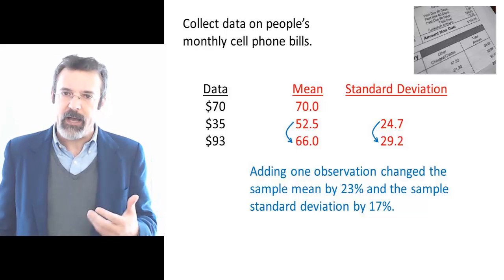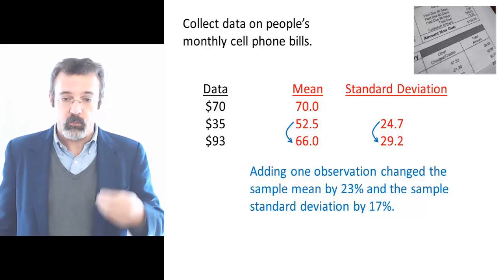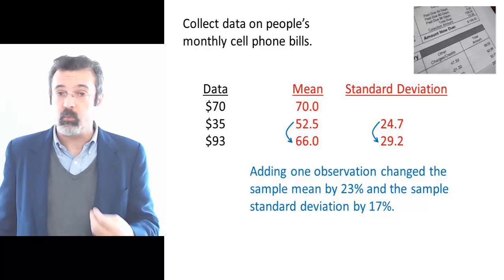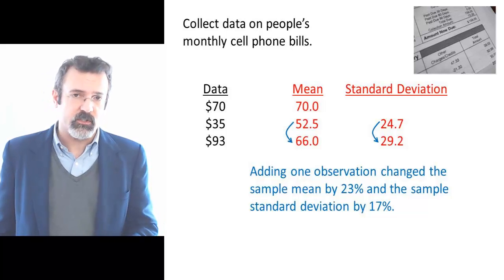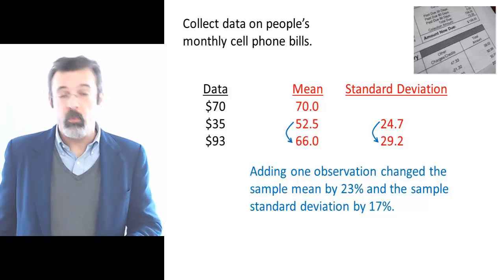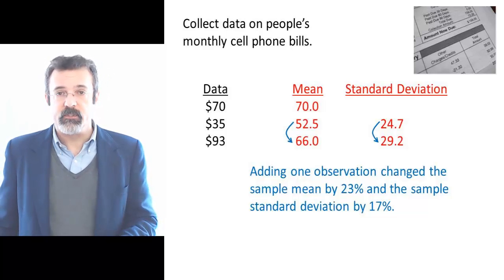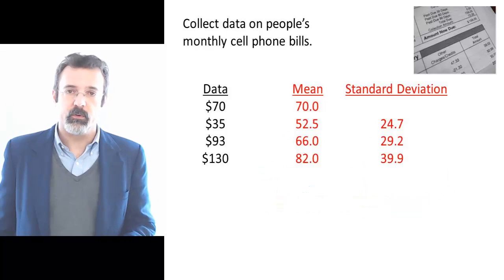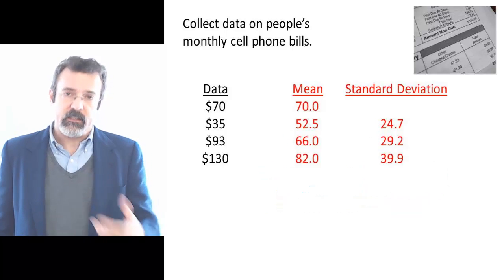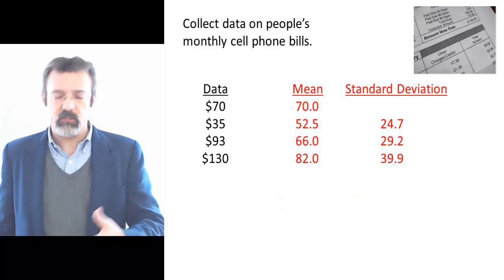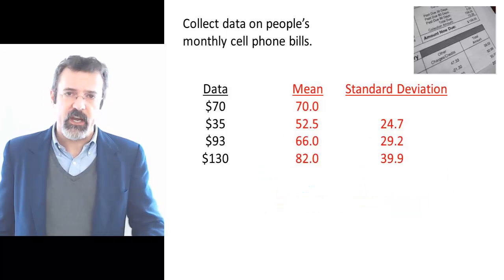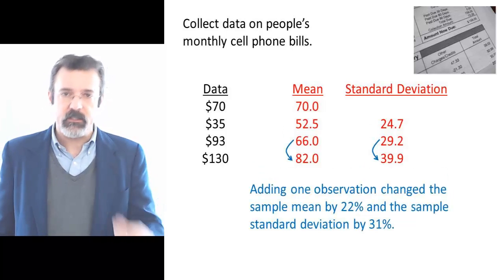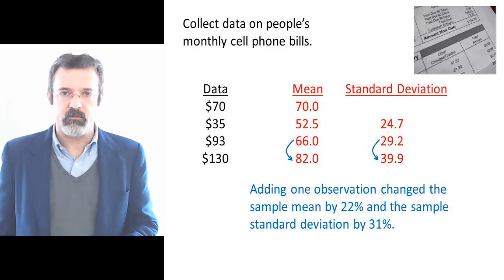These are relatively large changes in the sample mean and the sample standard deviation, all brought about by simply adding one observation to the dataset. We can add a fourth person to the dataset whose bill was $130, and again we see a relatively large change in the sample mean and the sample standard deviation.